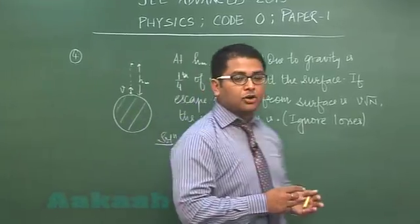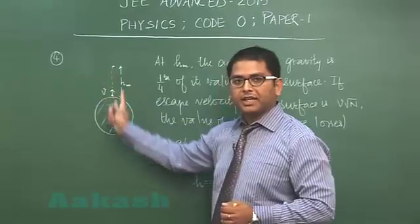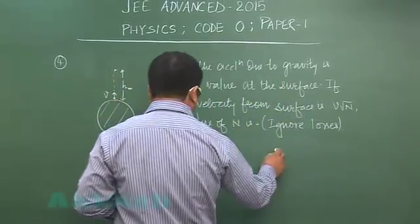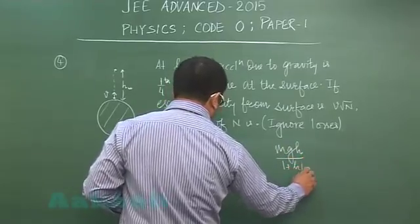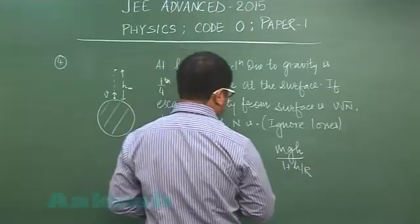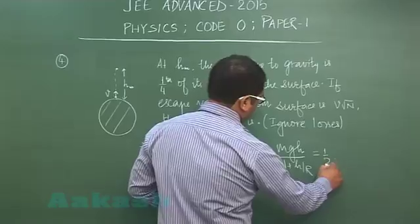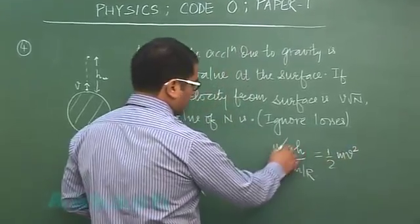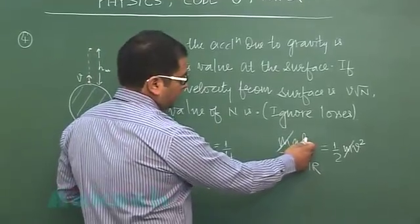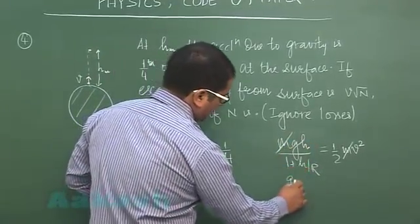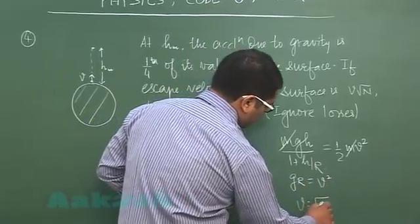Now if the losses are ignored, we can always conserve mechanical energy between the final point and initial point. I will be doing m g h by 1 plus h by r is the rise in potential energy, considering change in g due to height, and that would be one half m v square. Now h has been given as r, and this would be 2, so that will lead to g r equals v square. In other words, v is root g r.